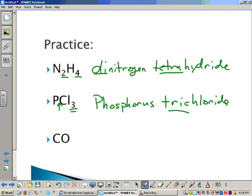Finally, CO. Again, no prefix for no subscript. So if carbon doesn't have a subscript, it doesn't get a prefix. So it's just carbon. But the second element in any covalent compound always has to have a prefix. So what's the prefix for one, the unwritten one? Mono. This is carbon monoxide.